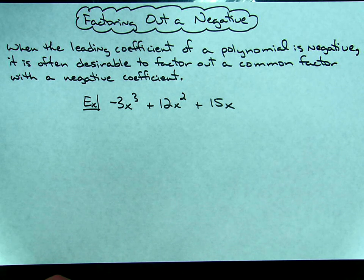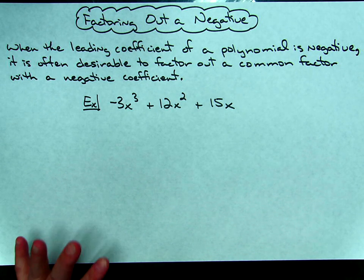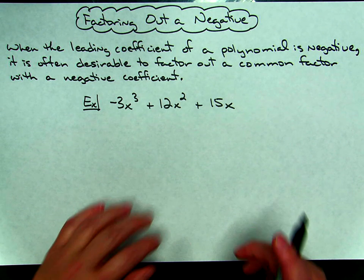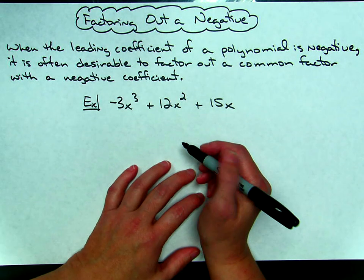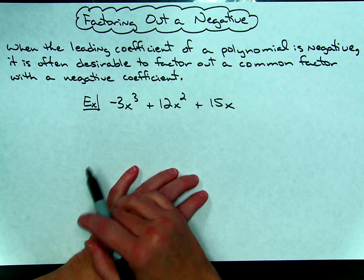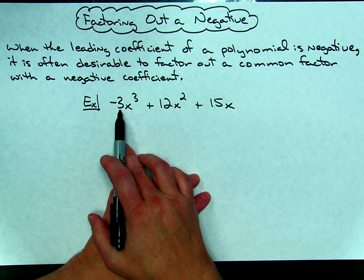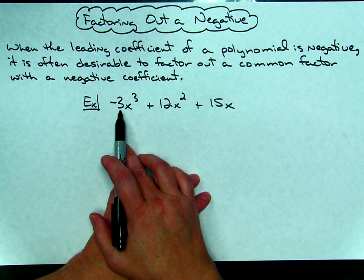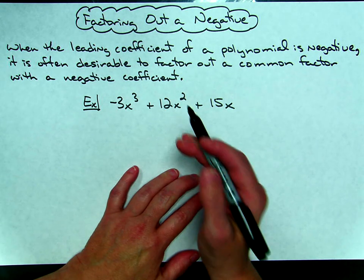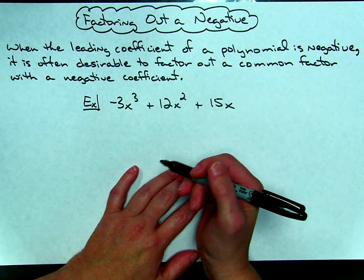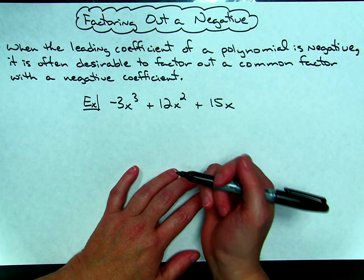Today we're going to take a look at a little trick of factoring out a negative. This will come in handy if you've got a polynomial expression and that leading term has a negative coefficient and the directions say factor completely. You're going to want to probably go ahead and factor out a negative so that it will set it up nice for the rest of the problem when you encounter a trinomial you'll be able to easily factor it.